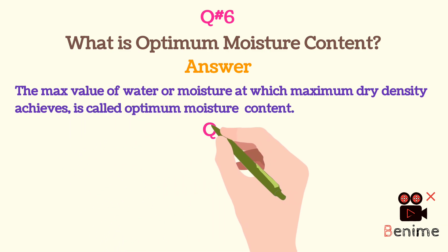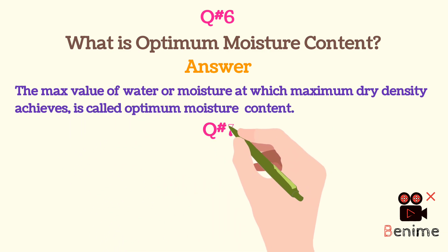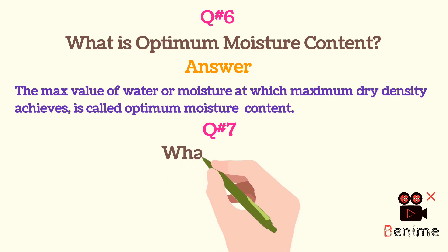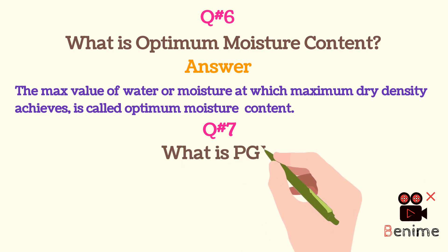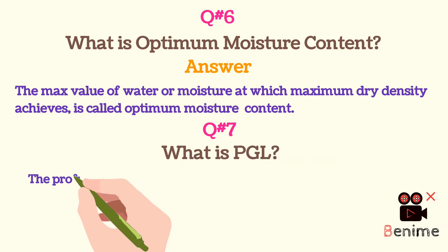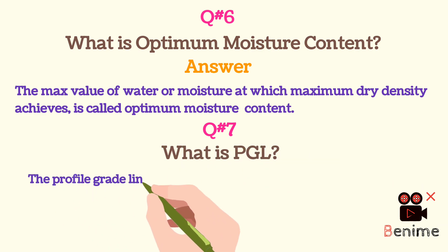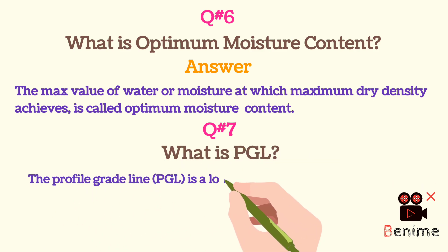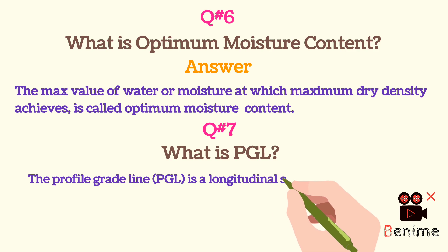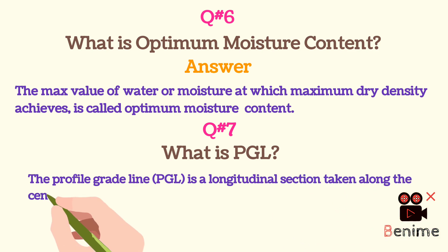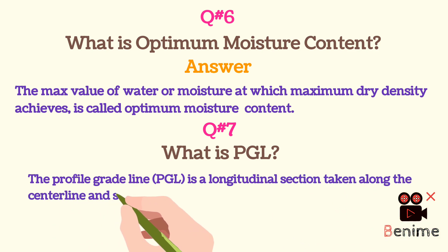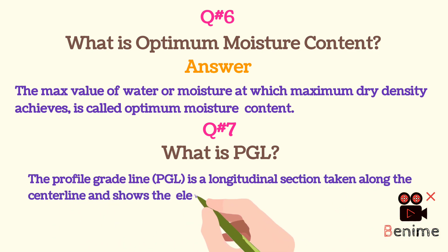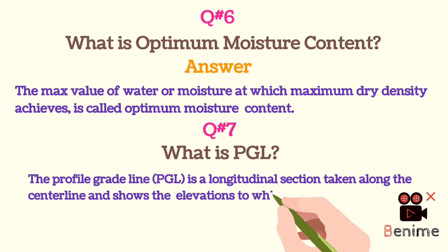Question 7: What is PGL? The Profile Grade Line (PGL) is a longitudinal section taken along the center line and shows the elevation and locations to which the road is built.